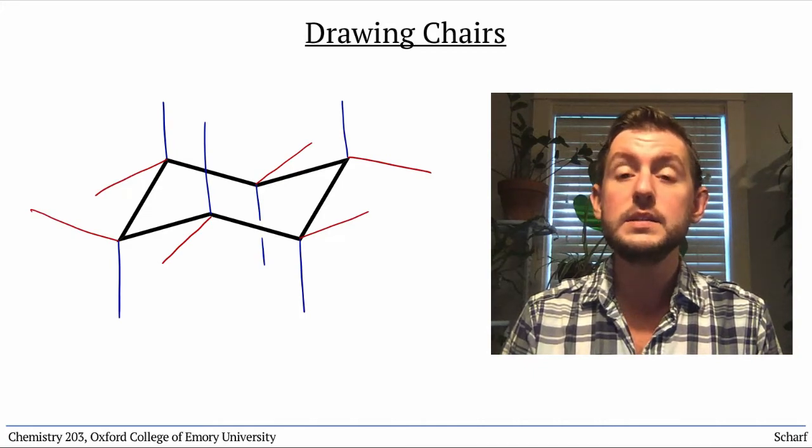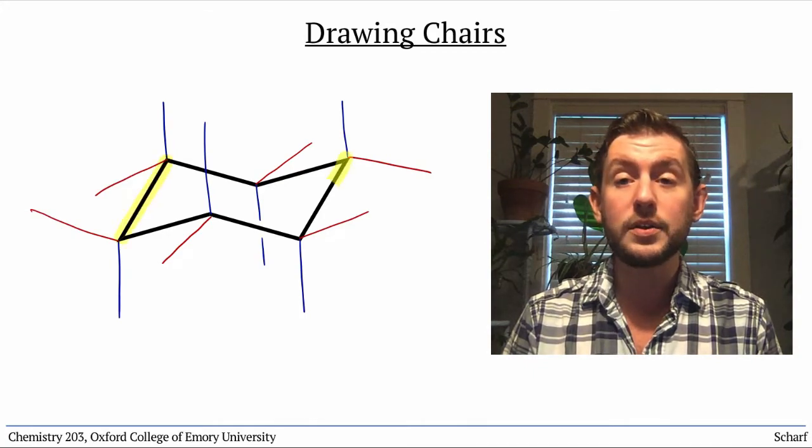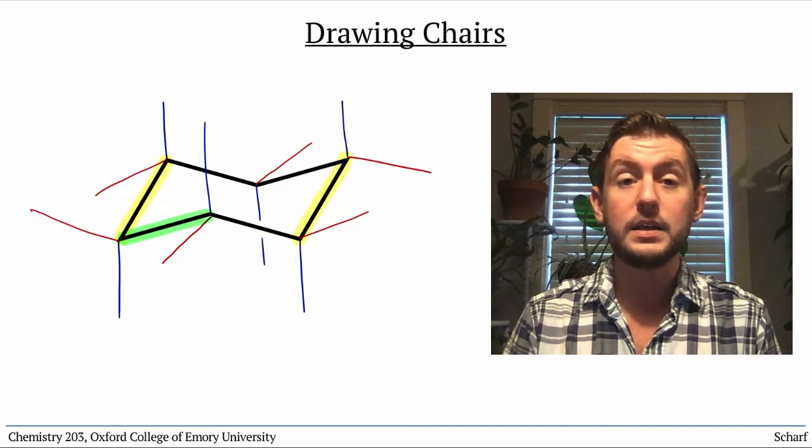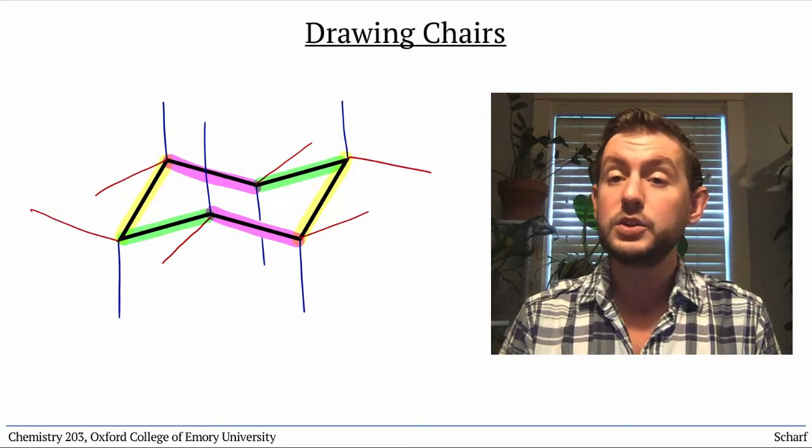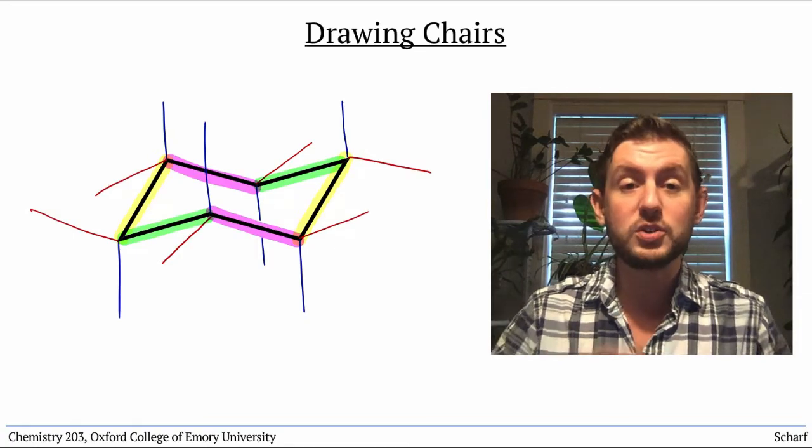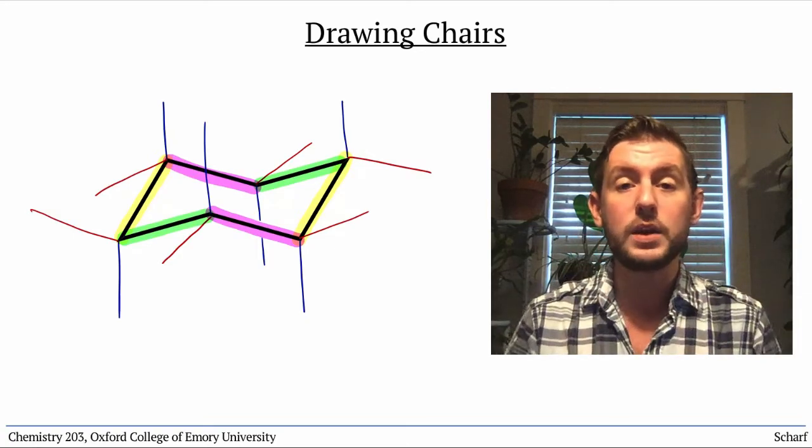The C-C bonds opposite each other are drawn parallel, so the chair itself has three sets of parallel lines. And no carbon atoms are drawn directly above or below another.